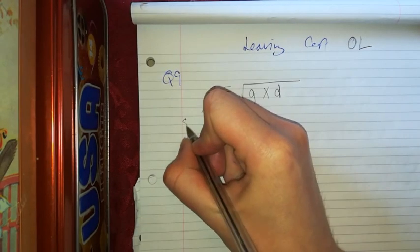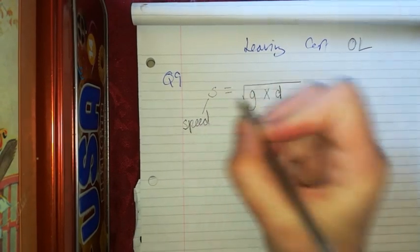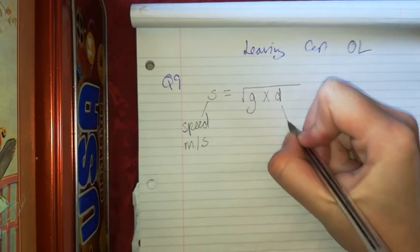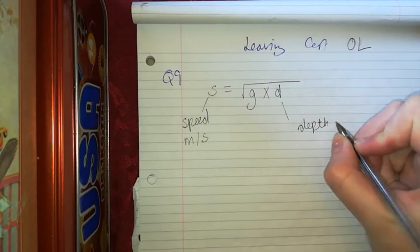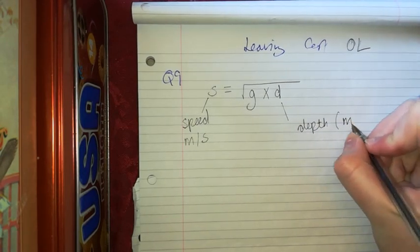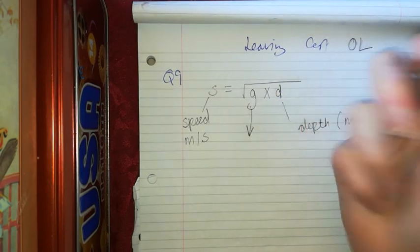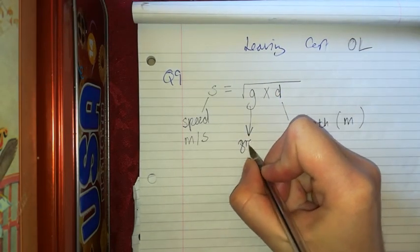S is going to be our speed and it's in meters per second, so I'm just going to write down the units. D is the depth of the ocean and that's in meters. And G is going to be gravity, which is 9.8.